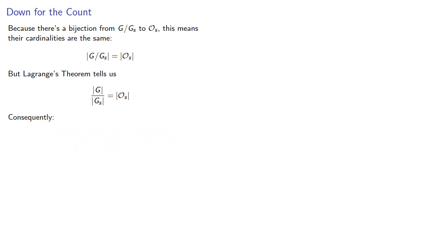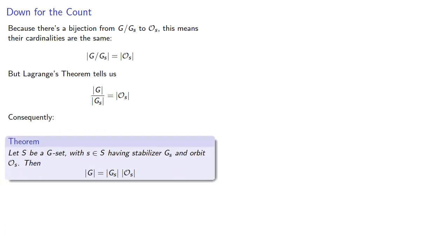And consequently, if S is a G-set with an element having stabilizer G_s and orbit O_s, then the order of the group is the product of the order of the stabilizer and the order of the orbit.